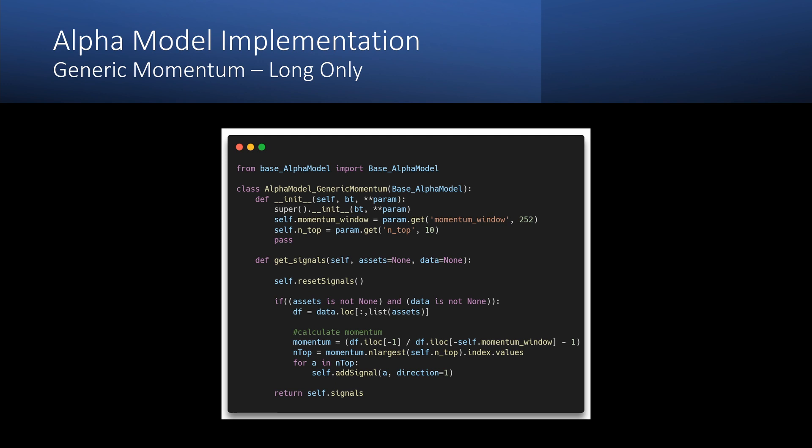The alpha model is a simple generic momentum strategy. Here we are going to buy N assets with the highest momentum. In the next video, we will check the momentum strategy with more details. It is a very simple but powerful approach for stock picking.